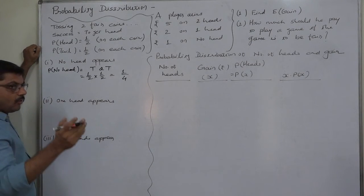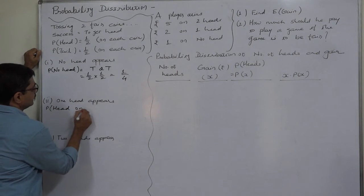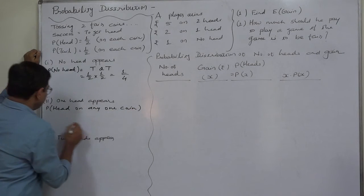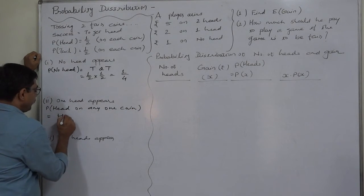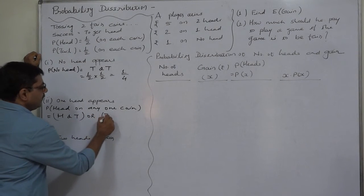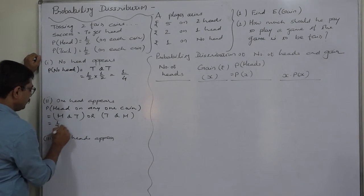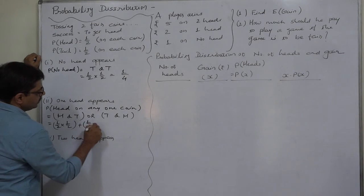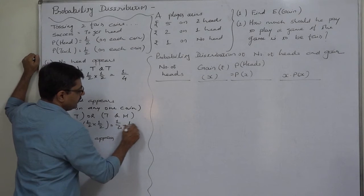For one head — head on any one coin — it is possible as: head on first and tail on second, or tail on first and head on second. So it is one-half times one-half, plus one-half times one-half, giving one-quarter plus one-quarter, which equals two-quarters.